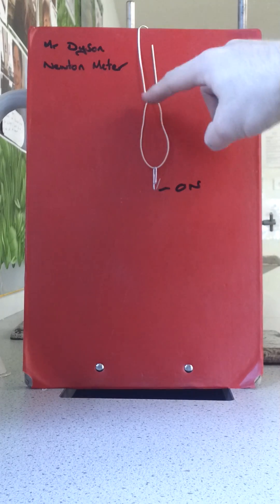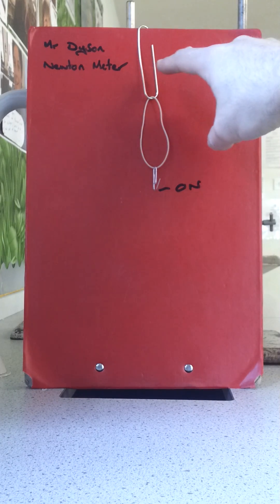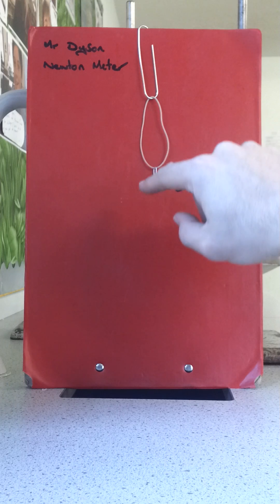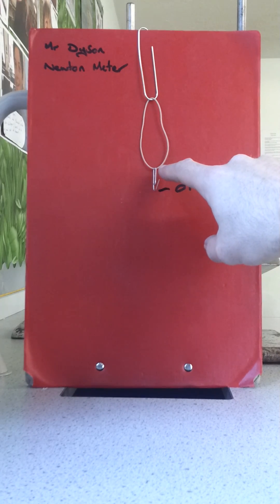We've got one paper clip at the top, a larger in this case, but it doesn't matter. An elastic band and a second paper clip, which we're going to use to hang the weights off.